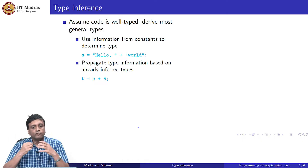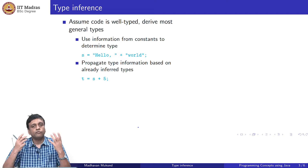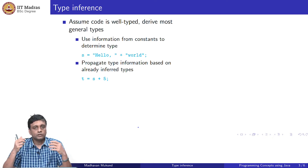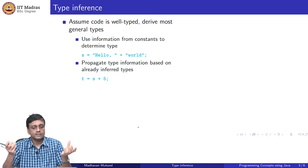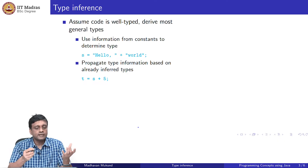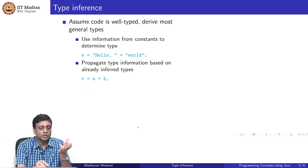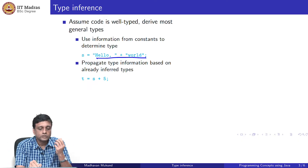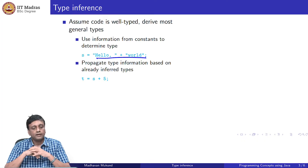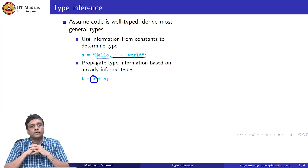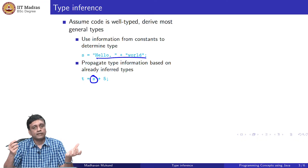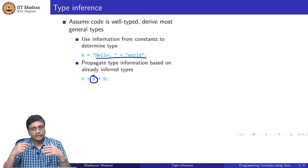The real goal of type inference is to work backwards — you assume the code is well-typed and try to figure out what the types should be, so that the entire program holds together with no inconsistencies. First, you can take constants and expressions involving constants to determine the type: because we had a concatenation of two strings, we were able to deduce that s is a string. Then we extend our inference by propagating this information incrementally. Crucially, this is all done by reading the code — not by waiting for execution.